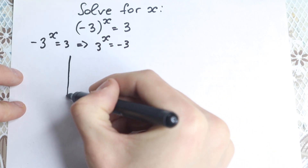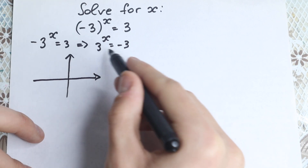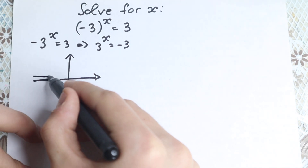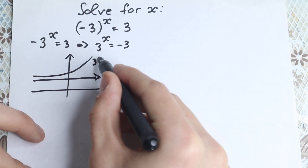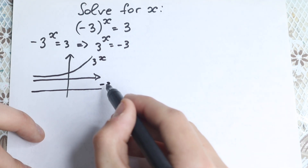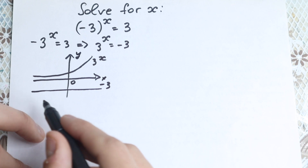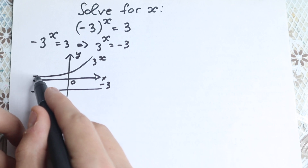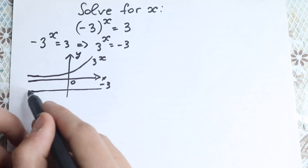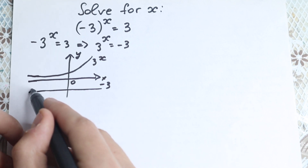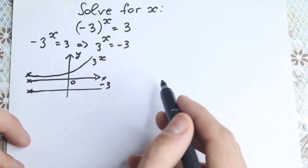If you draw a graph quickly: on the left-hand side we have 3 to the x, which is a growing exponential, and minus 3 is a constant. So 3 to the x is the exponential curve and minus 3 is a horizontal constant line. As you can see, there is no point of intersection — the exponential does not intersect with the line at minus 3. So no real solution.